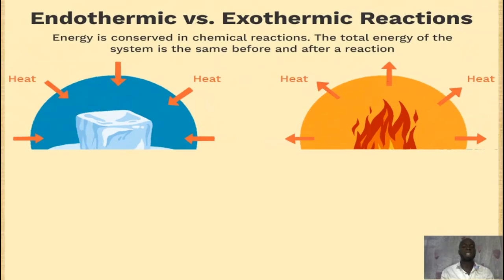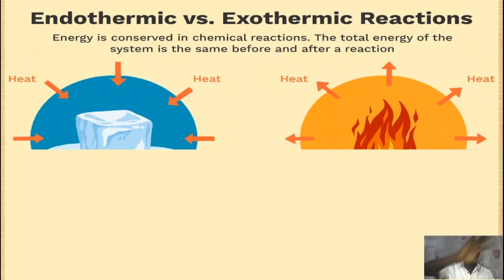Look at this diagram — I showed you this in a previous video. On the left is an endothermic process: you can see the arrow pointing towards the ice cube, showing it is getting heat from the surroundings. And you can also see a flame of a burning substance with arrows pointing outwards, showing that heat is lost to the surrounding. This is a typical example of an endothermic process and an exothermic process.